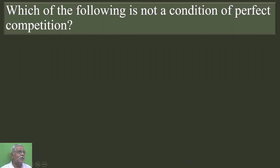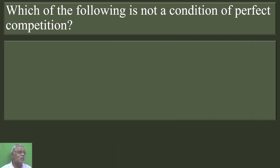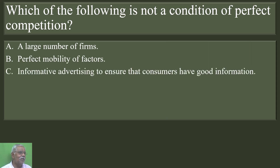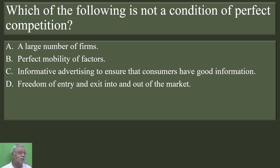The next question: which of the following is not a condition of perfect competition? Options: a large number of firms; perfect mobility of factors; informative advertising to ensure that consumers have good information; freedom of entry and exit into and out of the market. C is the correct answer. There is no place for advertisement in perfect competition — informative advertising to ensure consumers have good information is not a condition of perfect competition.